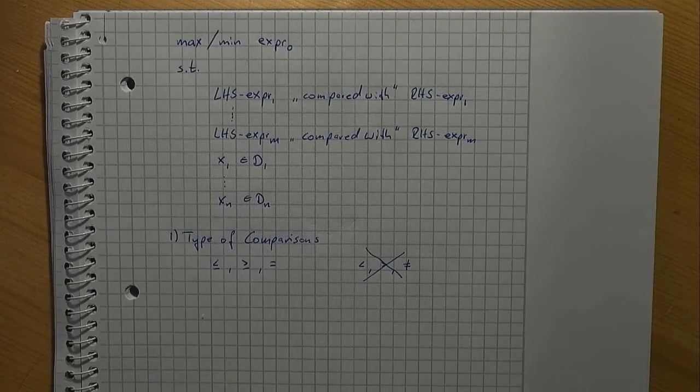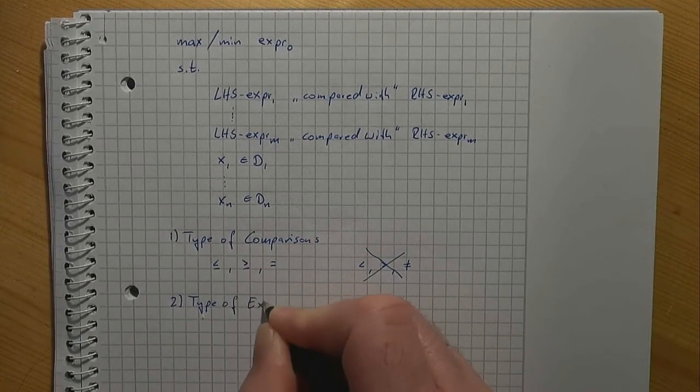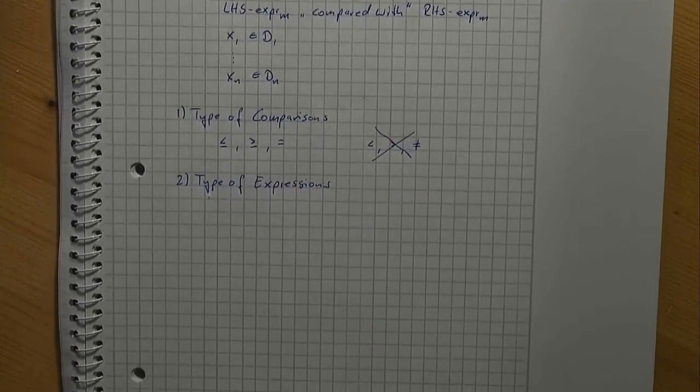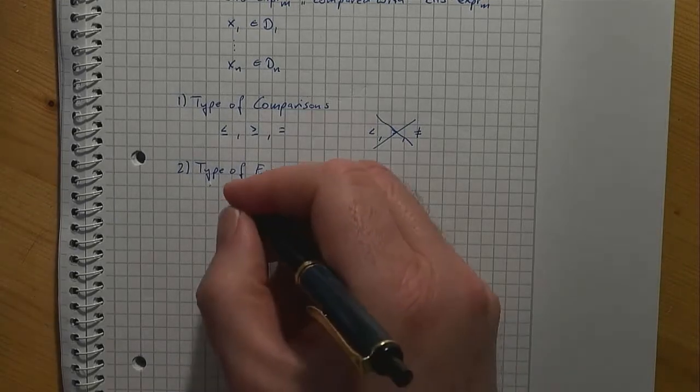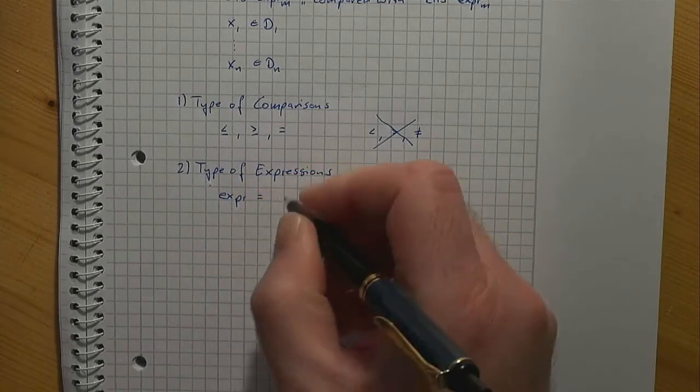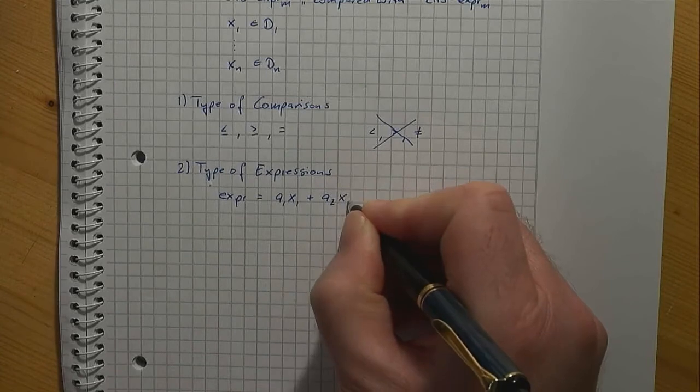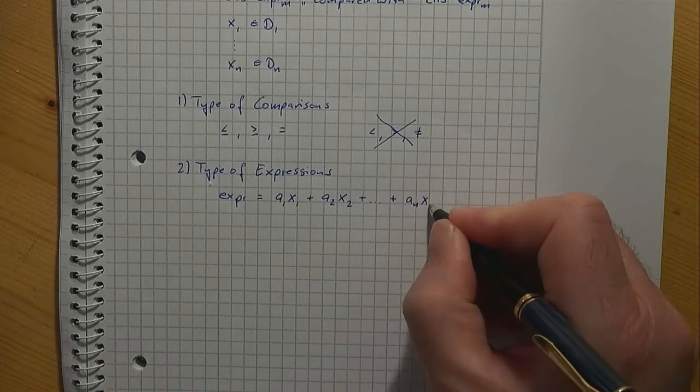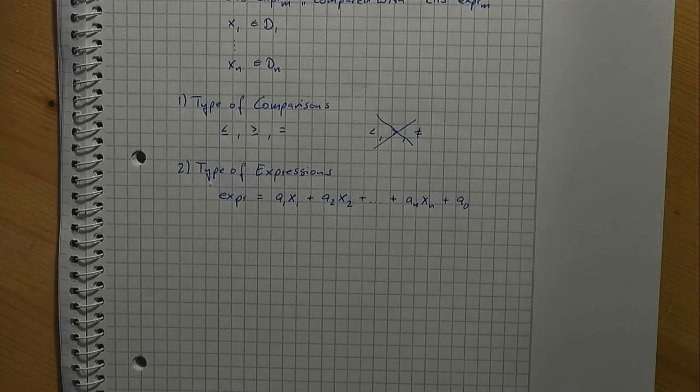Next we define a type of expressions. In our special case all expressions have the form: expression equals a1 times x1 plus a2 times x2 plus and so on up to an xn plus a0, where the a's are parameters. Such expressions are affine expressions.